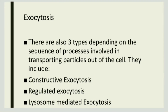The next type is regulated exocytosis, in which secretory cells become secretory vesicles only when they receive an extracellular signal. The third type is lysosome-mediated exocytosis, which involves the lysosome organelle. So the three types of exocytosis are constructive exocytosis, regulated exocytosis, and lysosome-mediated exocytosis.